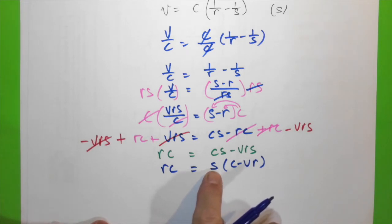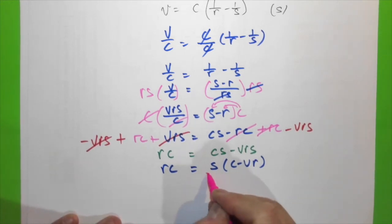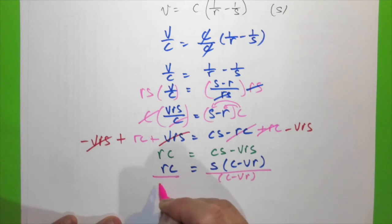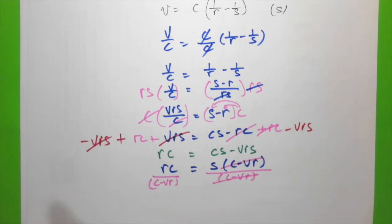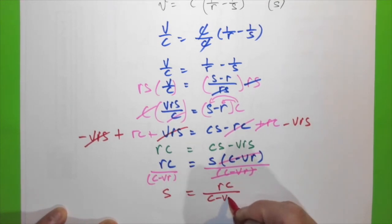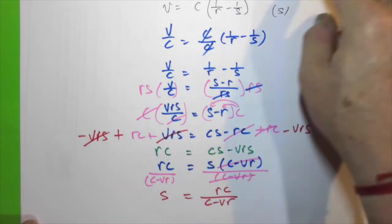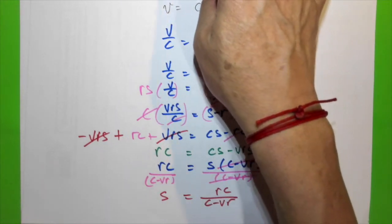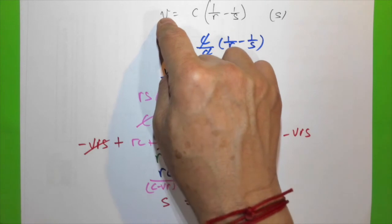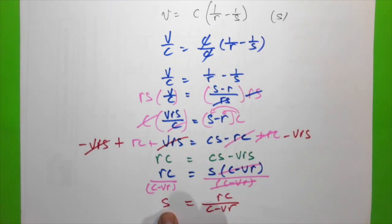To make s the subject, divide both sides by (c − vr), eliminating it. Rewriting with s as the subject: s = rc over (c − vr). Using various techniques, we've rearranged the formula from v as the subject to s as the subject. This is the end of the lesson.